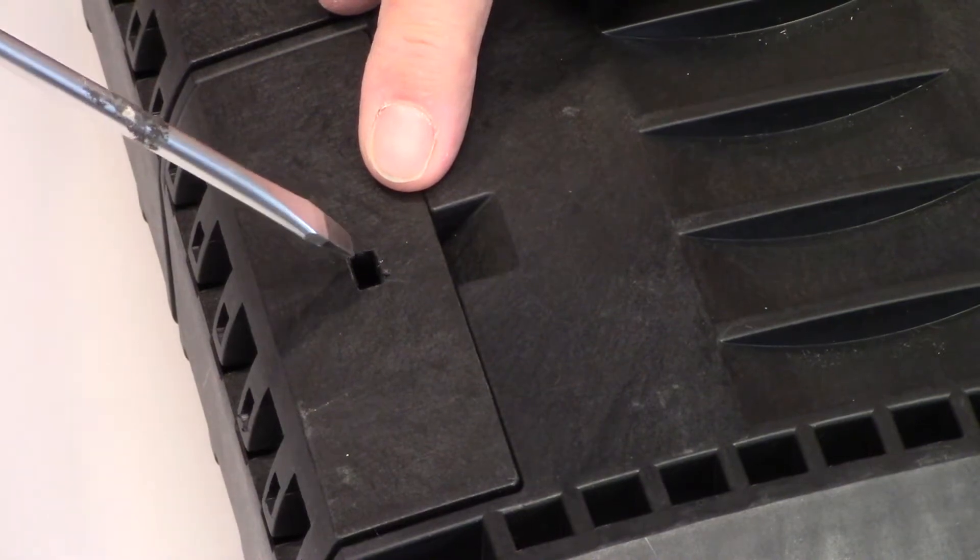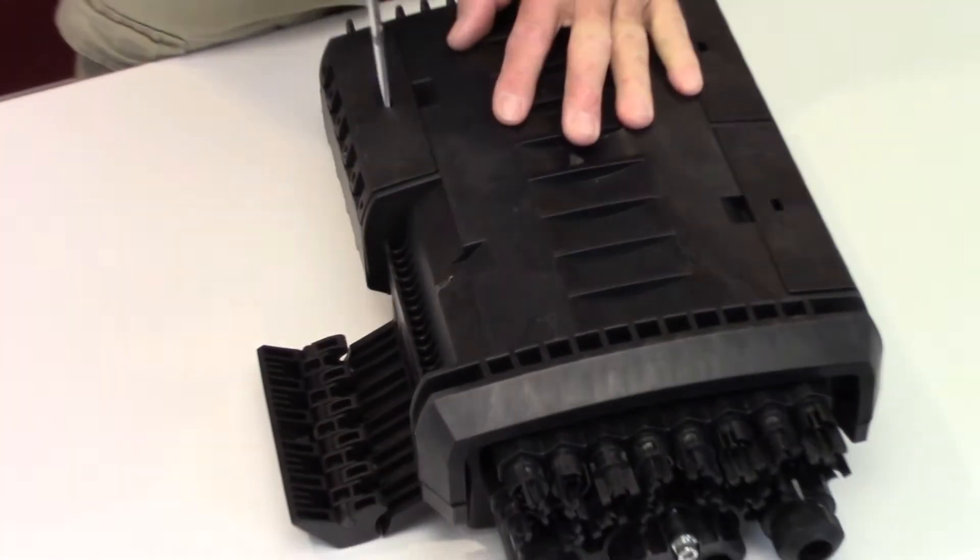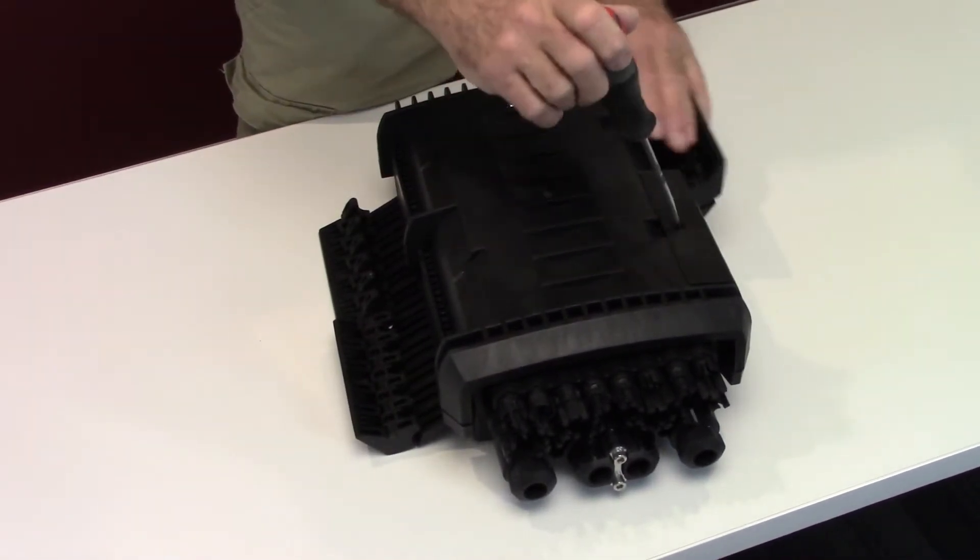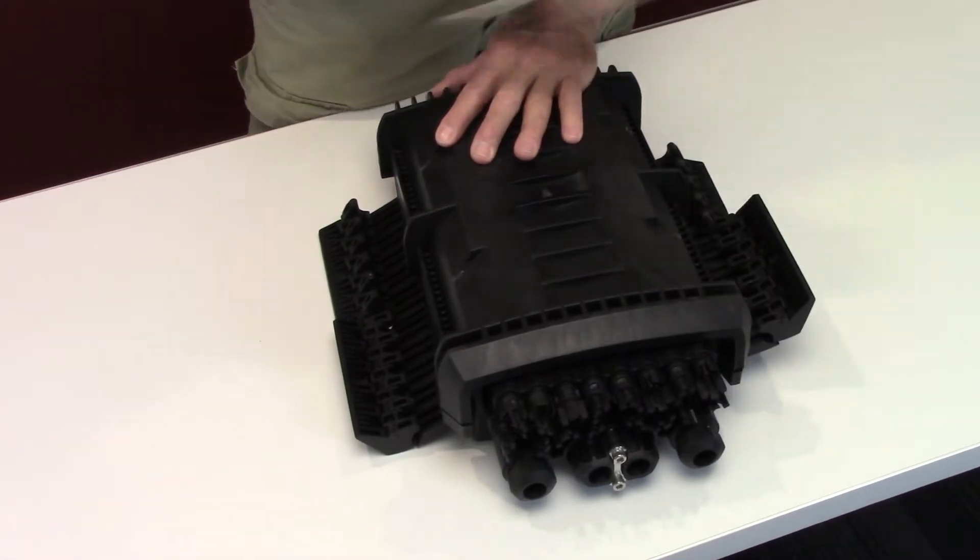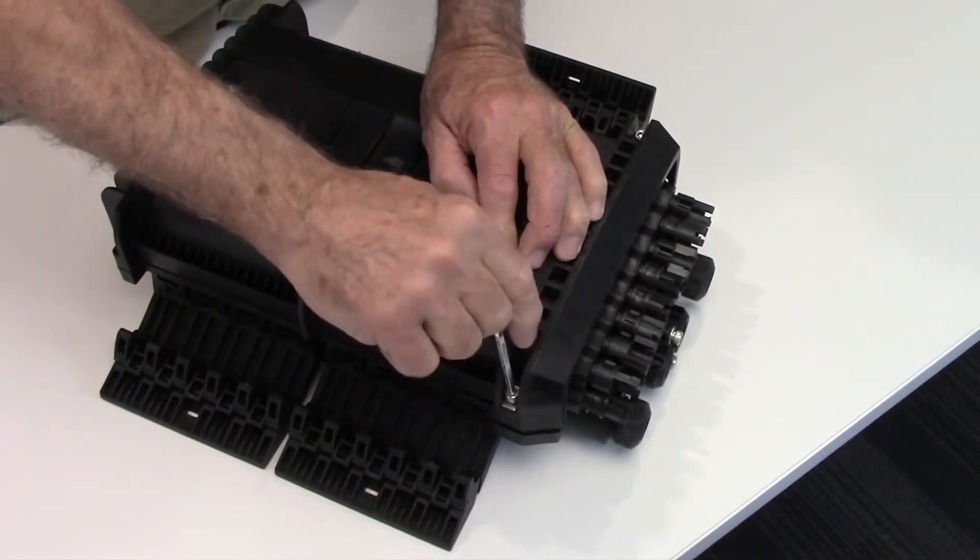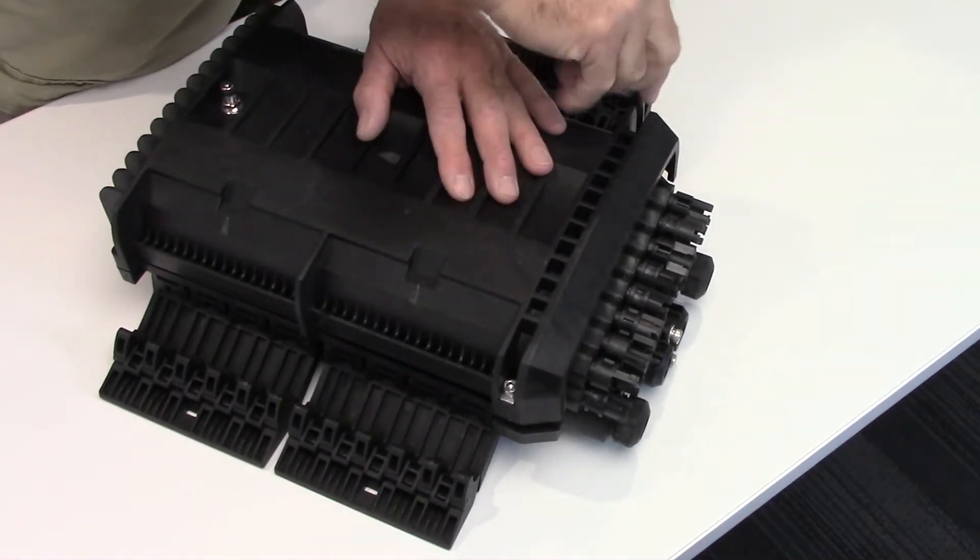Use the flathead screwdriver to flip open all four latches that secure the FSDC lid. Allen screws are next. Loosen the two Allen screws with the supplied hex wrench so that the FSDC lid can then be opened.